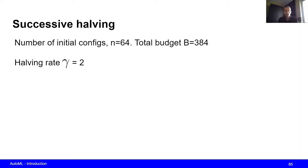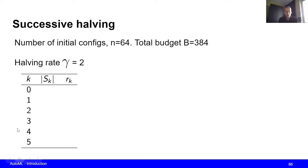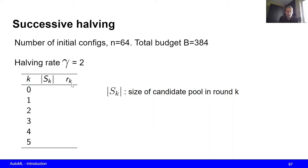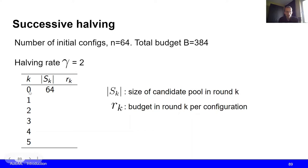Let's look at a concrete example. Suppose we start with n=64 initial configurations, a total budget of 384, and a halving rate gamma=2. We want to fill out a table where k represents the round, S_k is the number of configurations in round k, and R_k is the budget assigned to individual configurations in round k. The first value of S_k is 64, equal to our number of initial configurations.